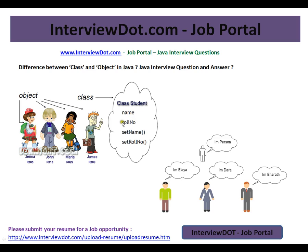To give you a visual example: here we have a class called Student. This class has attributes like student name and role number, and we have setters and getters for these two attributes. The objects, on the other hand, are specific instances like Jenna, John, Maria, and James — each with their own role number. These are the objects, and this is the class.